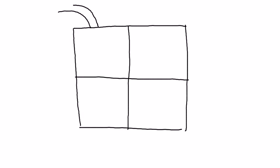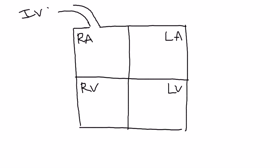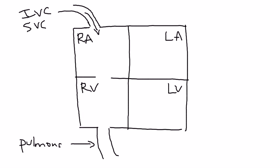As I'm drawing this, I'll label it: left ventricle, right ventricle, right atrium, left atrium. There are vessels that come into the heart — inferior vena cava, superior vena cava — that's the flow of the blood. Then of course there are some valves, and coming out here is the pulmonary artery.